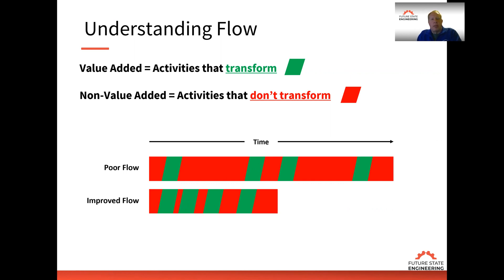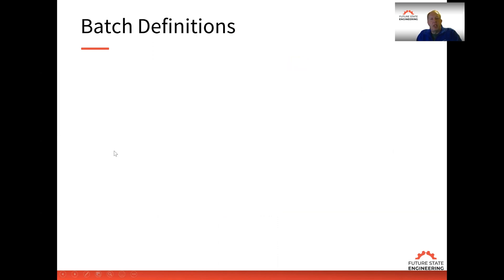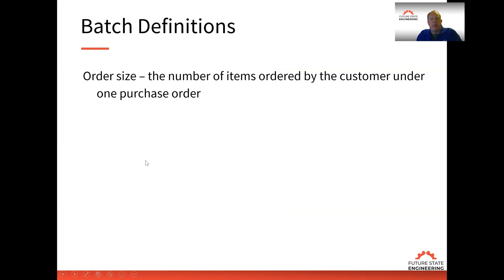One of the things that really affects flow is batching. Batching is defined as the amount of work that is done before switching off to do something else. A lot of people try to be efficient by batching work. The order size is typically what the customer orders on one purchase order that you're going to process within your organization.